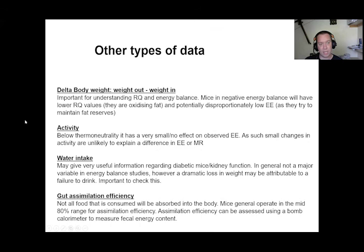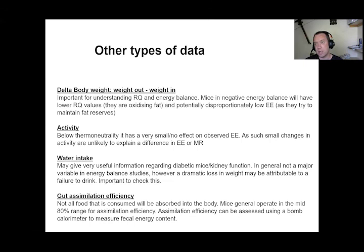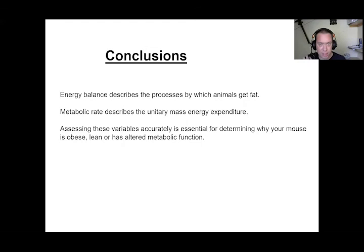We should really talk about food absorbed rather than food consumed — a process called gut assimilation efficiency. Not all food consumed is absorbed in either mice or humans. Mice generally operate in the mid-to-high 80s percent range for assimilation efficiency but there will still be some energy in feces. A bomb calorimeter can assess this. If one group is getting fatter than another despite identical food intake and energy expenditure, it could be a gastrointestinal phenotype worth investigating.